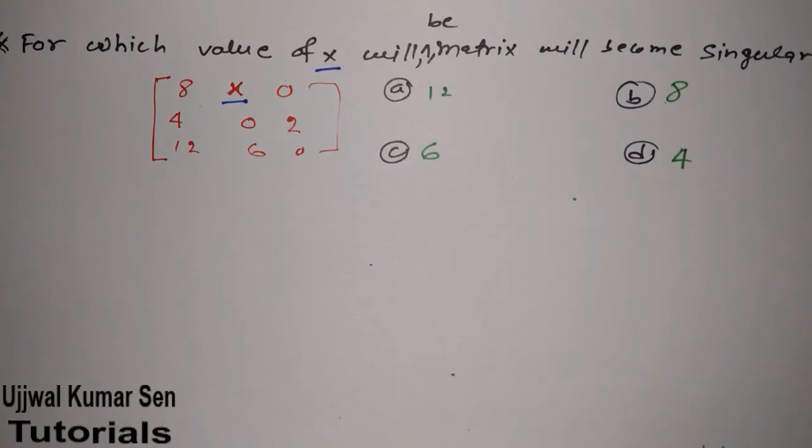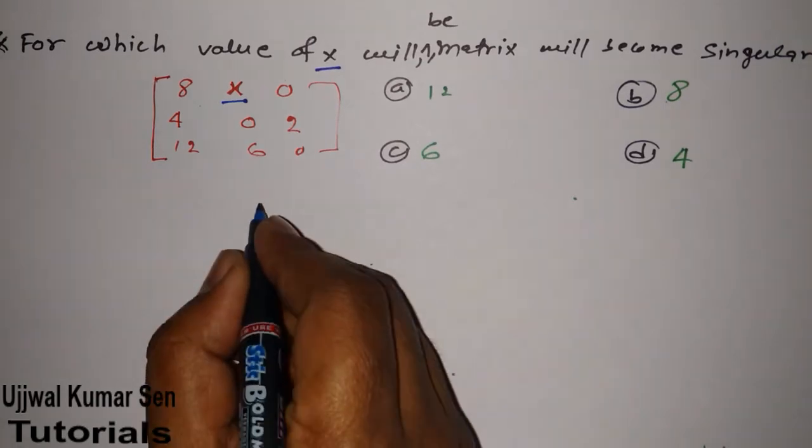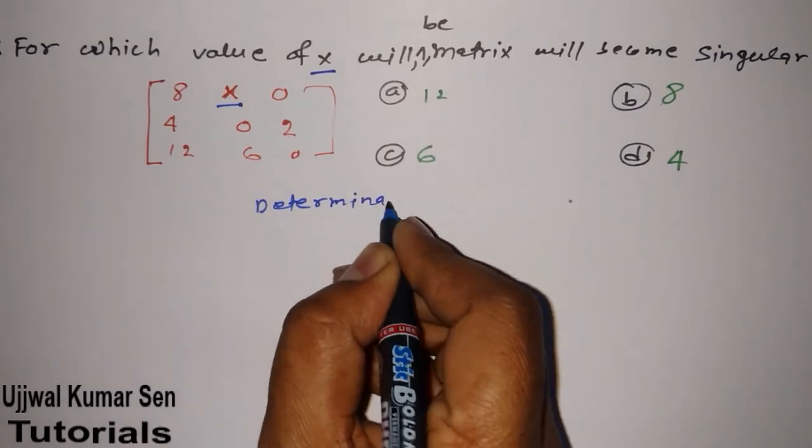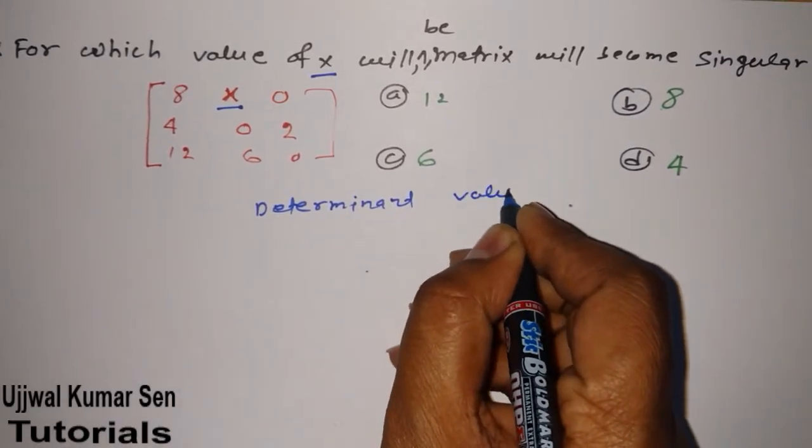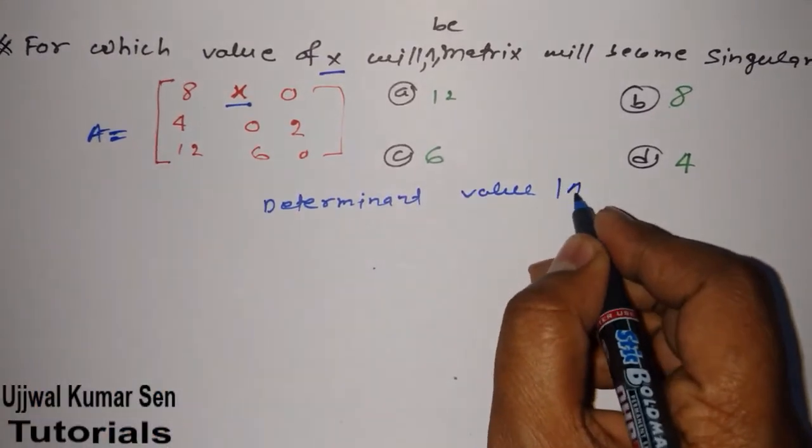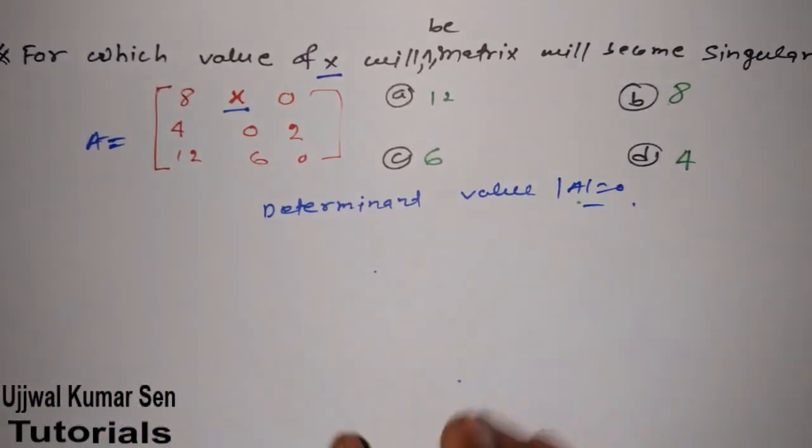For any matrix, when its determinant value, suppose that A is equal to this, A is equal to 0, then only that matrix is known as singular matrix.